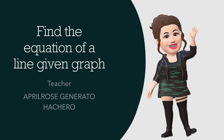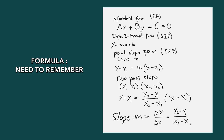So you have a given graph, and you need to find the equation of the line. We have so many ways on how to write the equation of a line. We have standard form, slope-intercept form, point-slope form, and two-point slope.